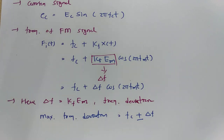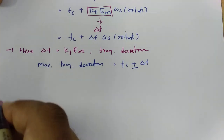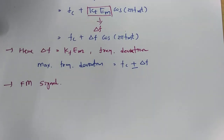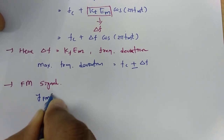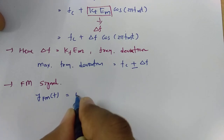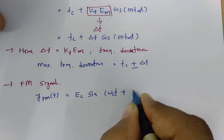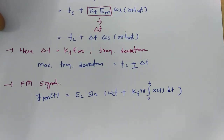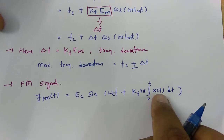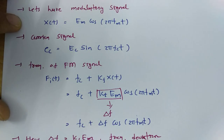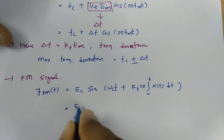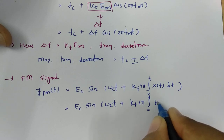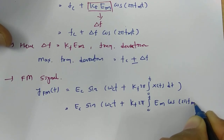Now let us derive a formula for the modulating index. The FM signal, as seen in the previous session, is y_FM(t) = Ec·sin(ωc t + (Kf / 2π)·∫₀ᵗ x(t) dt). This is the standard frequency modulated signal. Placing the value of x(t) = Em·cos(2π fm t), we get Ec·sin(ωc t + (Kf / 2π)·∫₀ᵗ Em·cos(2π fm t) dt).